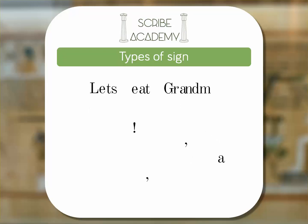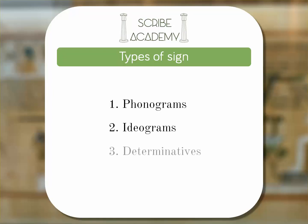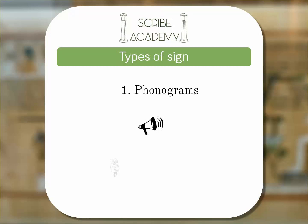In ancient Egyptian there were three types of sign: phonograms, ideograms, and determinatives. The first class, phonograms, are sound signs — they represent a sound like the letters of our alphabet and are the basic building blocks of words. To help remember this, think of microphones and telephones, which both have 'phone' in their name and both make sounds.